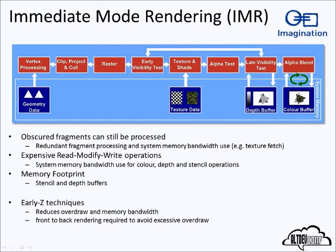Immediate mode rendering does have a few inherent downsides. It still allows obscured fragments to be processed — you can draw pixels you don't actually need for the final render. A lot of system memory bandwidth has to be used. This is why immediate mode renderers on desktop have their own dedicated graphics memory. In mobile architectures, you can't usually afford that for power, cost, or space reasons — they tend to have shared memory architectures, so bandwidth is a real cost.